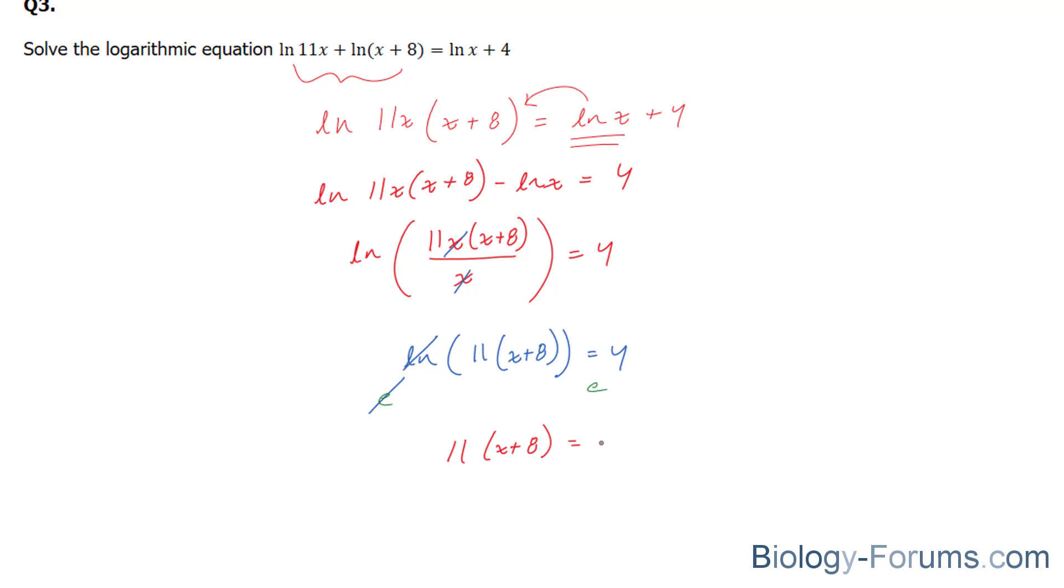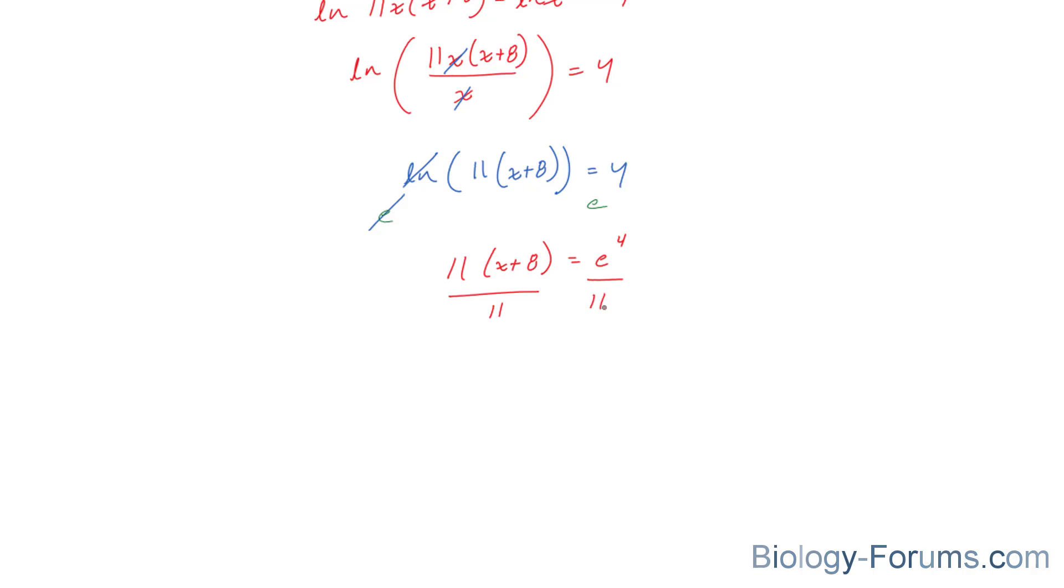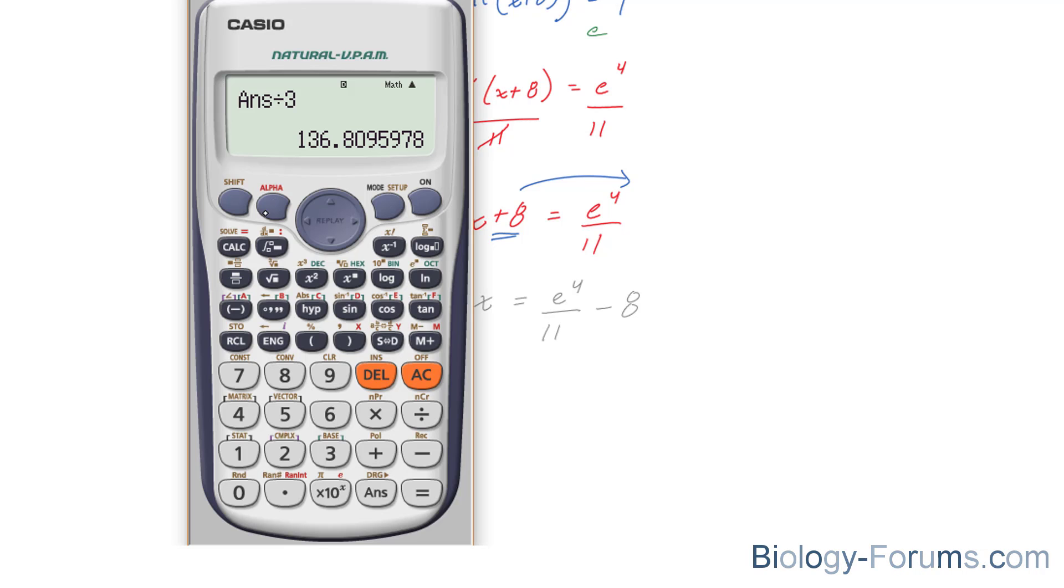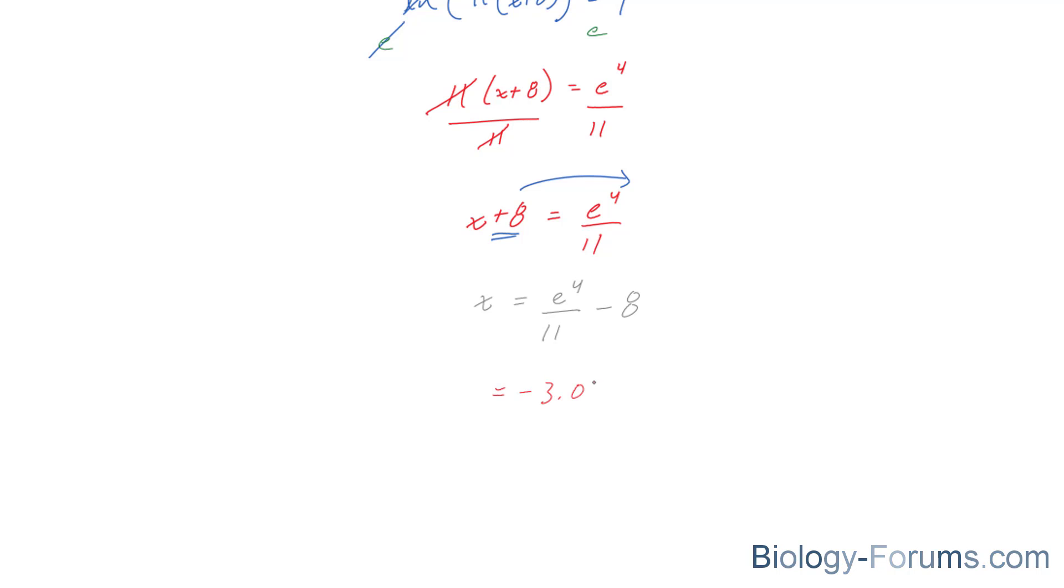We can now divide both sides by 11, leaving us with (x + 8) = e^4 / 11. And subsequently, we can bring this number here, giving us x = (e^4 / 11) - 8. We're going to calculate the right side. e to the power of 4 over 11 minus 8 is equal to approximately -3.03.